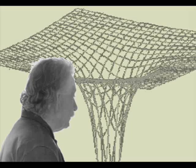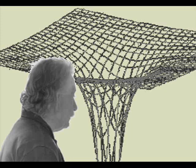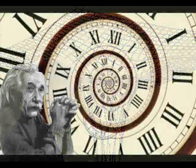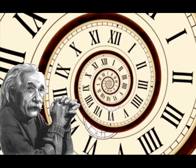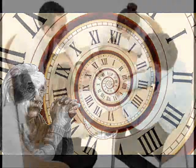This even applies to things that don't seem to have any component parts. For example, Einstein looked at empty space and found that it had a geometry — it could be distorted and warped. He went on to find that time was entwined with space to form a space-time fabric. Anything you can think of can be broken down into pieces.